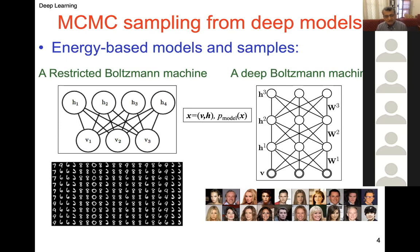Once we specify the weights between variables and cliques, this can be written as a Gibbs distribution involving a product of all the factors. We need the partition function — one over Z — which sums over all possible values so the probability distribution always sums to one. Regardless of what weights are learned, we guarantee this is a probability distribution giving high values for high probability configurations and low values for low probability configurations. We use an energy formulation which flips probability to energy.